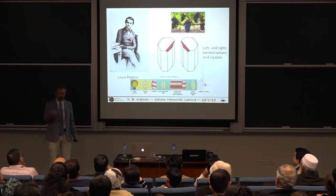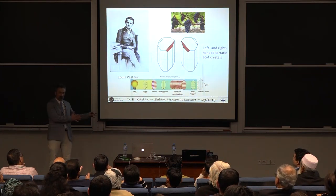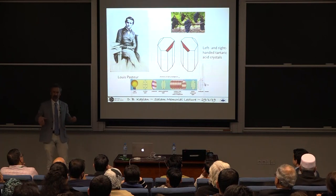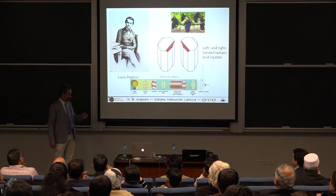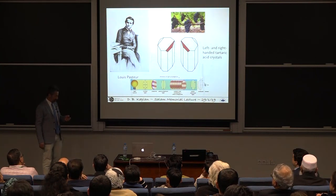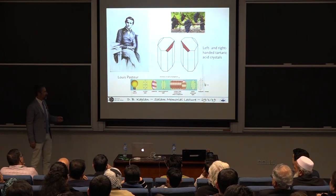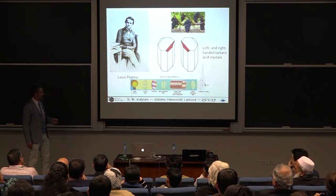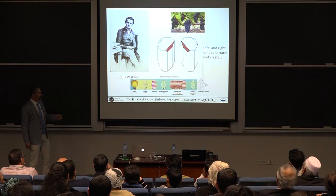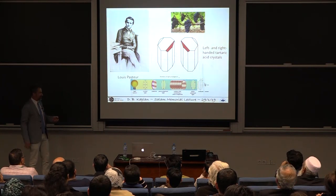So one of the things he did early on is he evaporated the wine and he looked at it. He found tartaric acid crystals. He noticed that the crystals were asymmetric and they came in two different types. Here are the pictures of the two crystals. He took his tweezers and he separated them out. He put one type of crystal on one side, one on the other, and then he dissolved them in water.